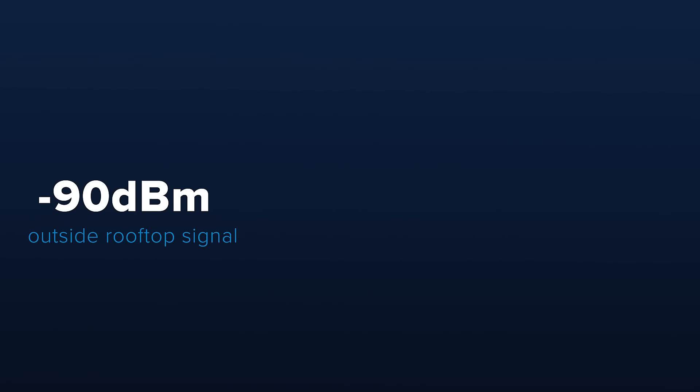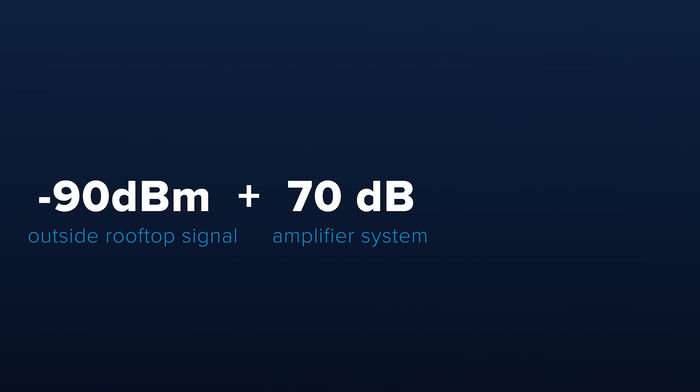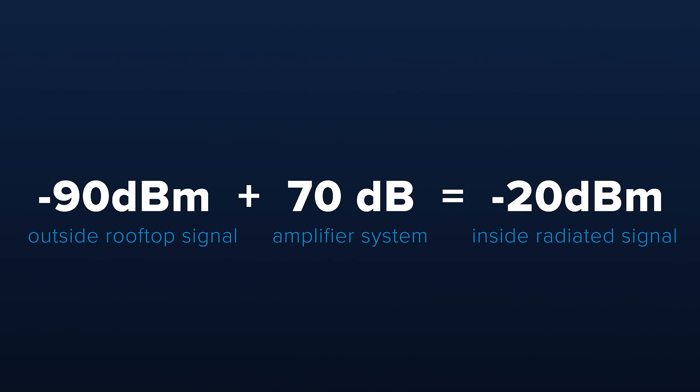DB, on the other hand, is a relative figure and is simply an abbreviation for the word decibel. We use DB to describe how much increase or decrease in signal strength we have in our system. For example, if we measure an outside rooftop signal of -90 DBM and our amplifier system has a total gain of 70 DB, then our inside radiated signal would be -20 DBM.